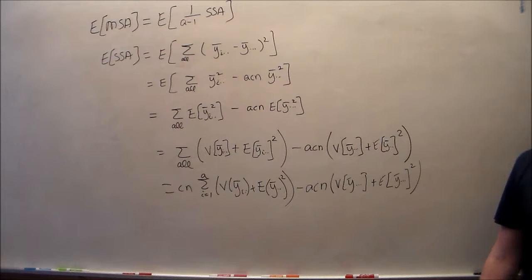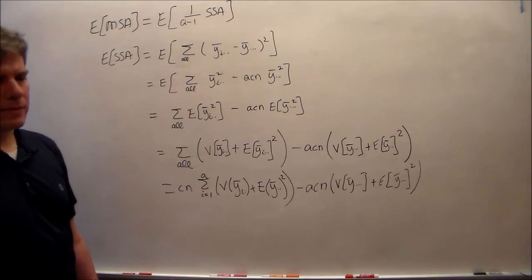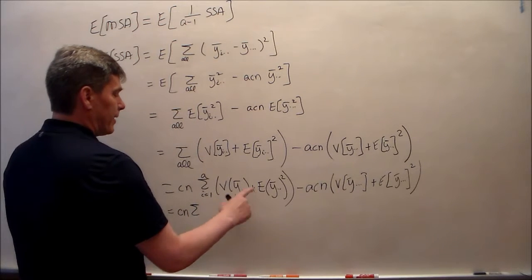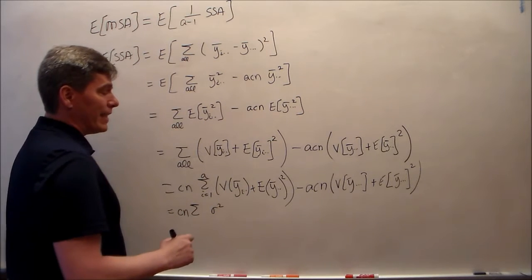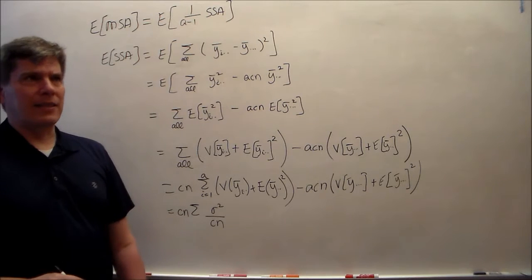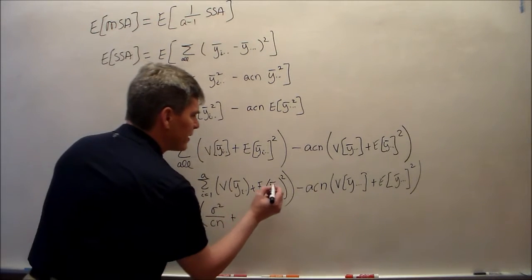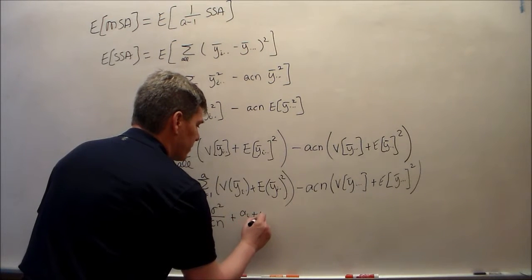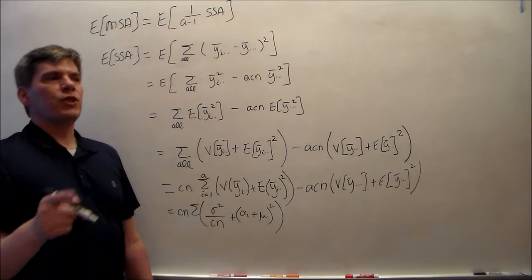That should be expected value. So it's been algebra with some definitions and that one stat trick. And we know what the variance of ȳᵢ.. is. The variance of ȳᵢ.., which has σ² as the variance of those epsilons, divided by — well, we summed over two indices to get that: we summed over the j-index and over the k-index. There's c in the j-index and n in the k-index. The expected value of ȳᵢ.. is just αᵢ plus μ. Check the linear model.